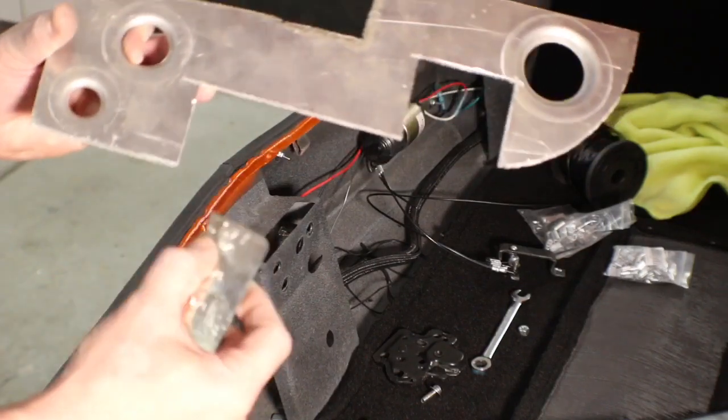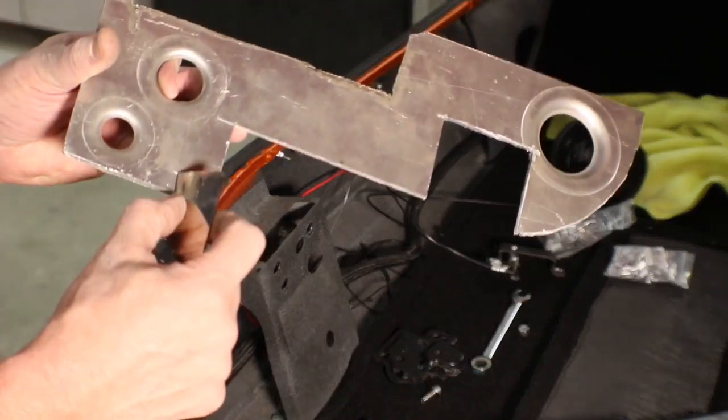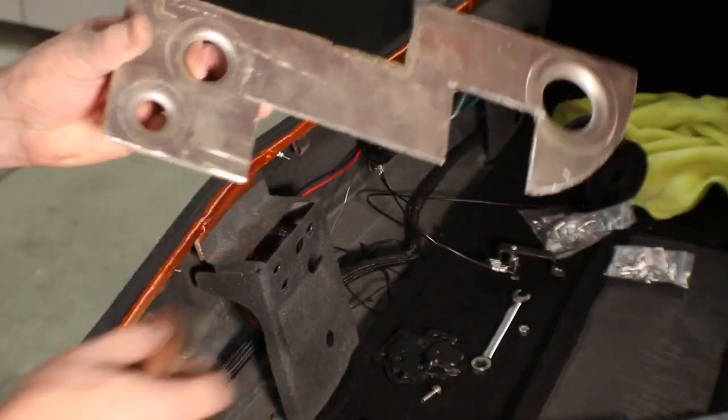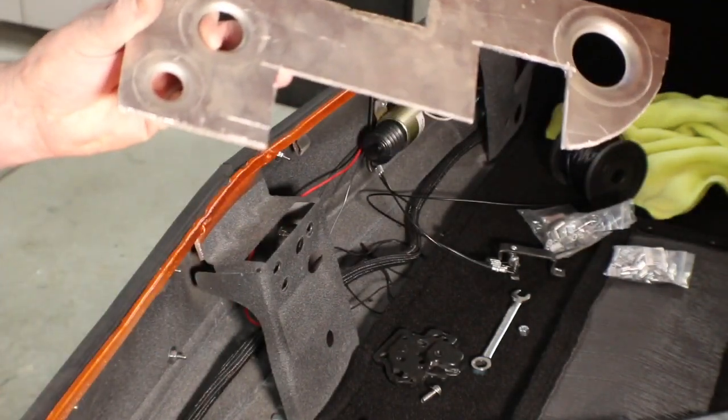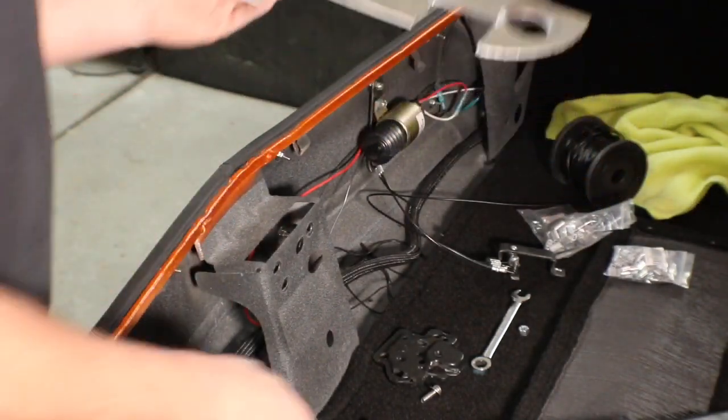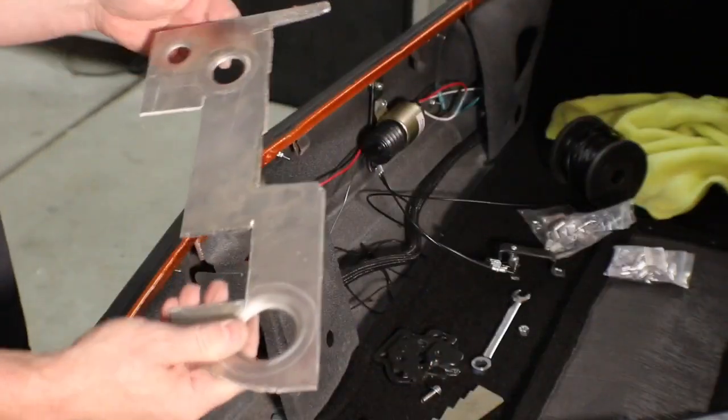And then you go to the half inch and go the other direction, and there you go. You have a one inch by half inch square, no measure, no getting a square out and all that stuff.